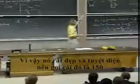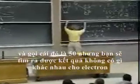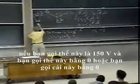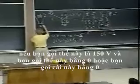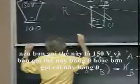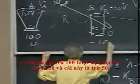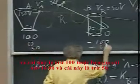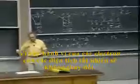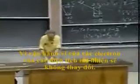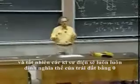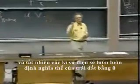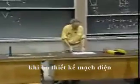It's very nice to call one potential 150 and the other 50, but you wouldn't find any different answer for the electron if you call this potential 100 volts and the other zero, or this one zero and the other minus 100, or this one 50 and this one minus 50. The behavior of the electrons, of the charges, would of course not change. Electrical engineers always, by definition, call the potential of the earth zero when they build their circuits.